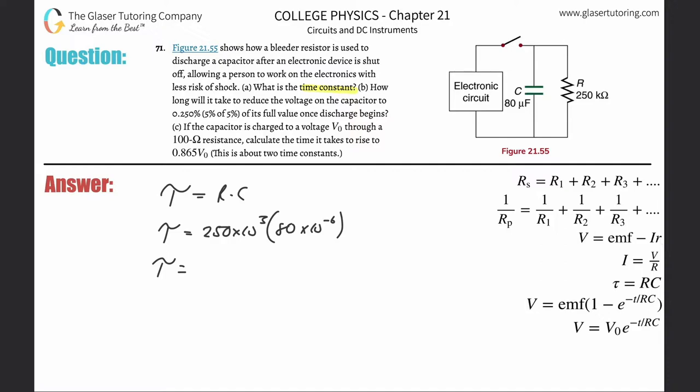It will be measured in seconds. So 250 times 10 to the third multiplied by 80 times 10 to the minus sixth equals 20.0 seconds. That's the time constant. That takes care of letter A.